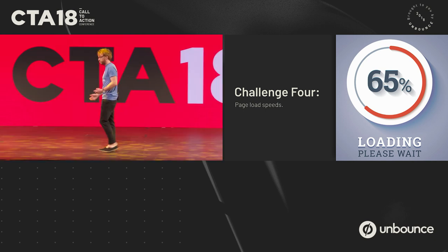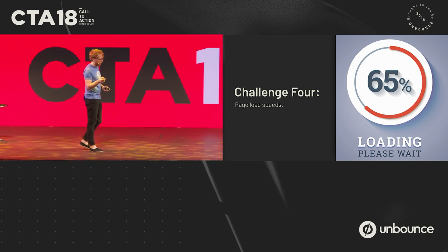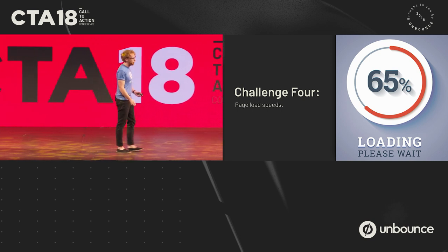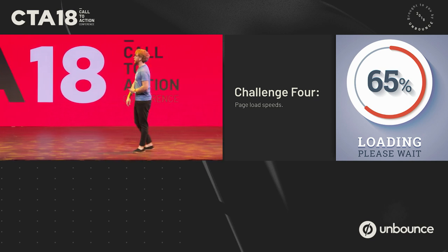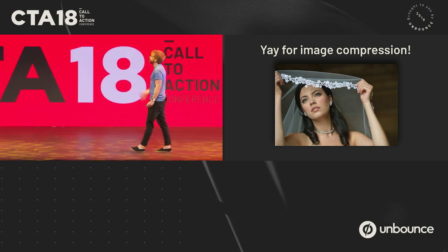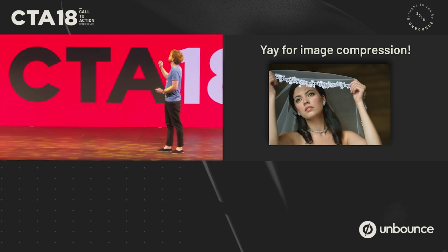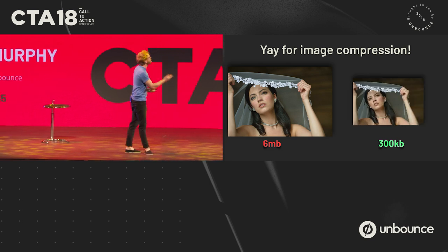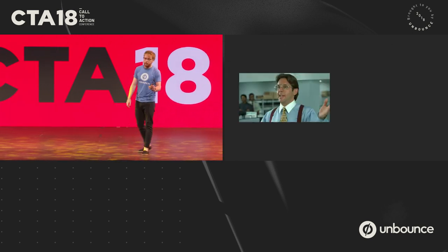Challenge four: page load speeds. These solutions are great and everyone's loving these big beautiful images, but what about the page load speed? That conversion stat is still playing on your mind — conversions fall by 12% for every second a page takes to load. Surely all these high-res assets are going to affect page speed dramatically. So — yay for image compression! We've built image compression into our builder. This image I got from Unsplash went from six megabytes down to 300 KB without losing any noticeable quality at all. Super easy, great result: smaller images, faster loading pages.